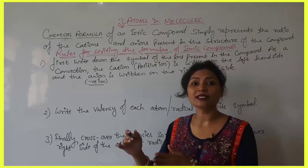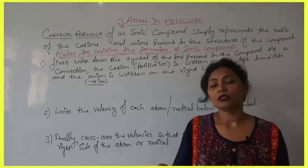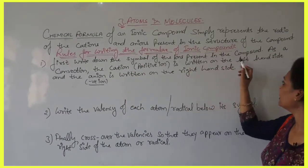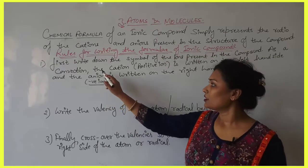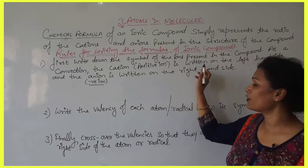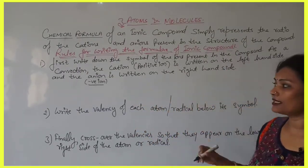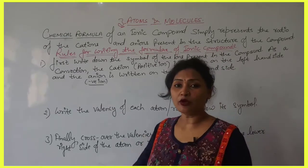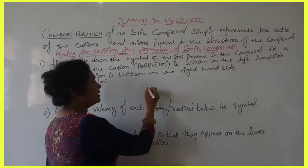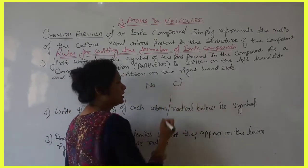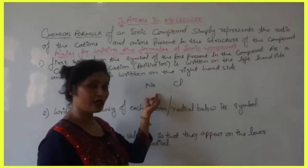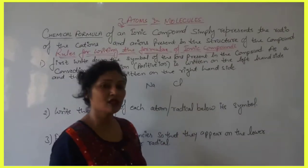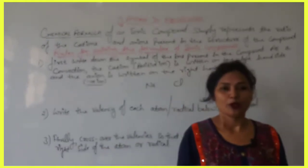Rule one: First, write down the symbols of the elements from which the compound is formed. As a convention, the cation (positive ion) is written on the left-hand side and the negative ion (anion) is written on the right-hand side. For example, for sodium chloride, Na is on the left and Cl is on the right.